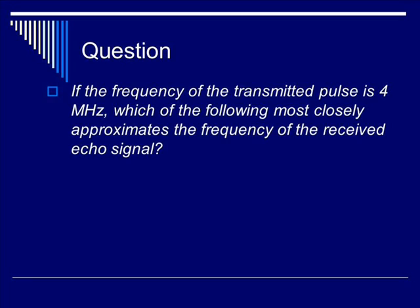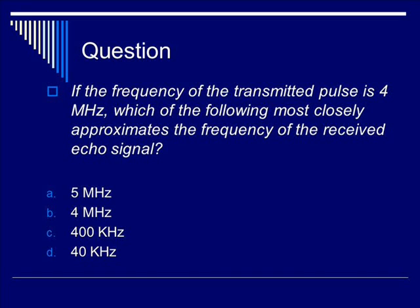Let's test your knowledge. If the frequency of the transmitted pulse is 4 MHz, which of the following most closely approximates the frequency of the received signal? Is it A, 5 MHz? Is it B, 4 MHz? Is it C, 400 kHz? Or is it D, 40 kHz? The correct answer is B — 4 MHz. As discussed earlier, the transmitted and received frequencies are very close in a Doppler system.